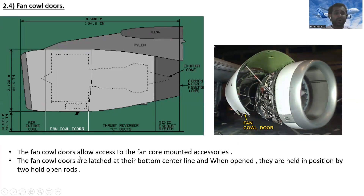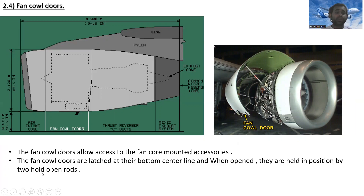The fan cowl doors allow access to the fan cowl-mounted accessories. The fan cowl doors are latched at their bottom centerline, and when open they are held in position by two hold-open rods.